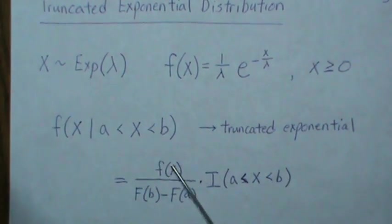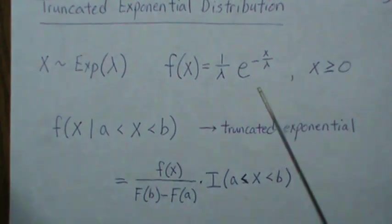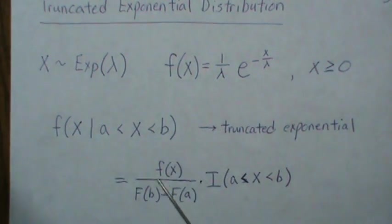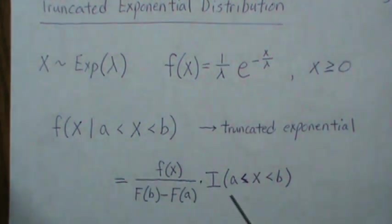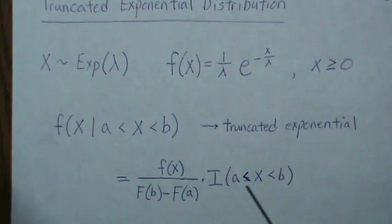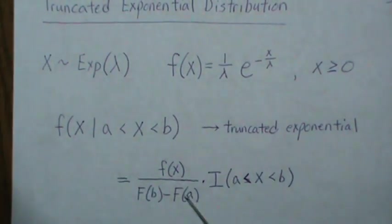The density for this is f of x divided by the probability of being between a and b which is the same as the probability of being less than b minus the probability of less than a, and this is an indicator function that's one if we're between a and b so it restricts it to this region here and it can be easily shown that that integrates to one.